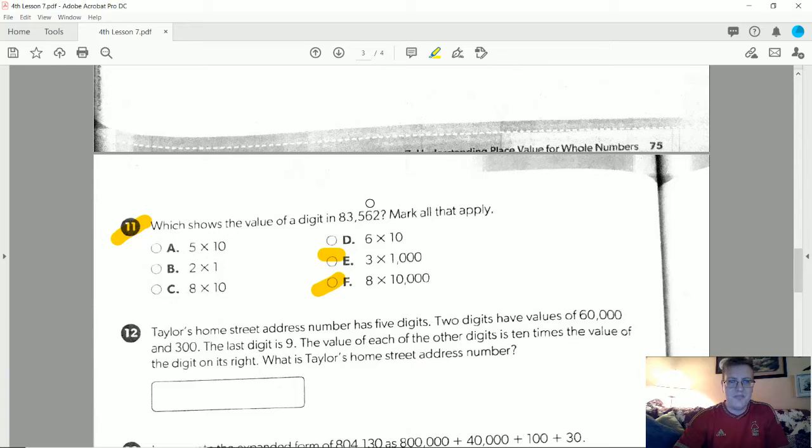I have 5 in the hundreds place, which would be 5 times 100. There's a 5 times 10, but there's no 5 times 100, so I don't have an answer for that. 6 times 10 would be letter D, and then this one would be 2 times 1, and I do have letter B, which is 2 times 1, so those are our correct answers for that.